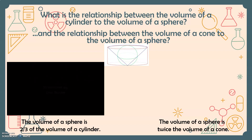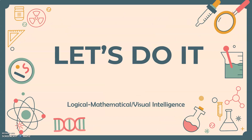This can also be written as 4πr³ over three. Just like in the video, the volume of a sphere is twice the volume of a cone. To solve for the volume of a sphere, we will simply use the formula 4πr³ divided by three. Now let's have some examples.